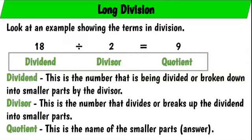The divisor: this is the number that divides or breaks up the dividend into smaller parts. And the quotient: this is the name of the smaller parts.